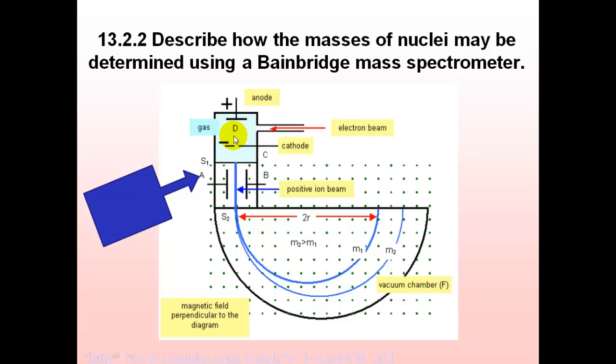When it's ionized it will become positively charged and it will be accelerated towards a cathode and then shoot through here. Then in this area here we have a magnetic field.